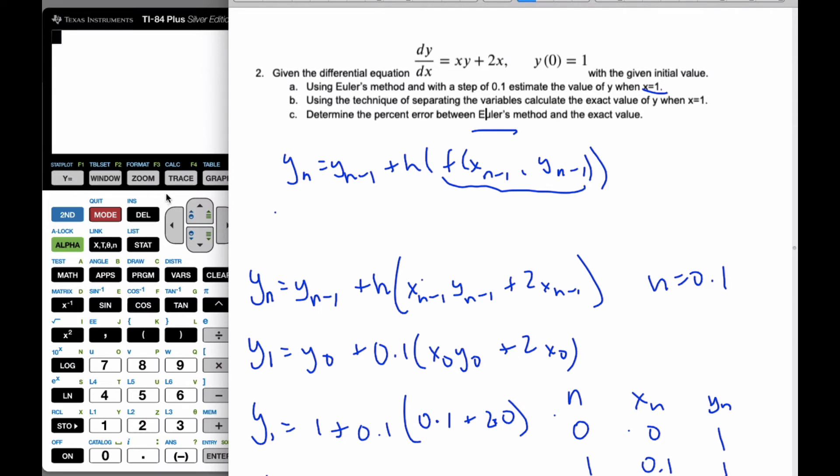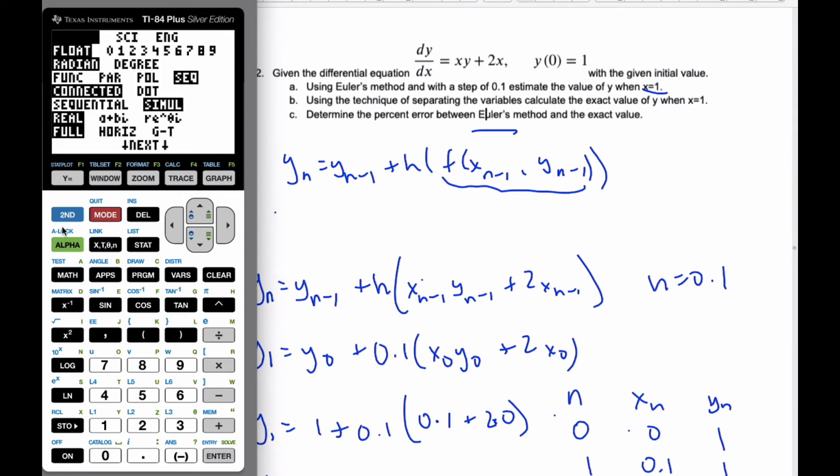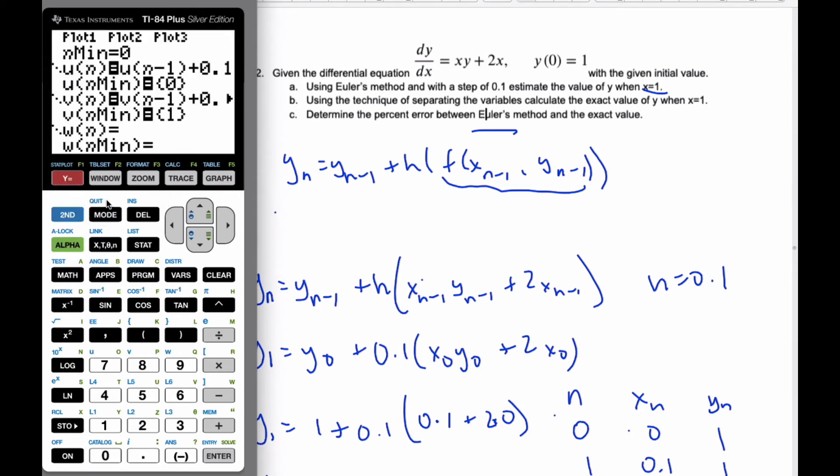And so if I use technology here, I'm going to make sure that I am in sequence mode. And when I go to y equals, I've already put the information in. I get n minimum. I'm doing 0, x0, y0. It's the 0.1. u is this little u here. So second number 7, n minus 1. And it's going to be 0.1. So it's going to say this is 0. That's what this says is 0 plus 0.1.